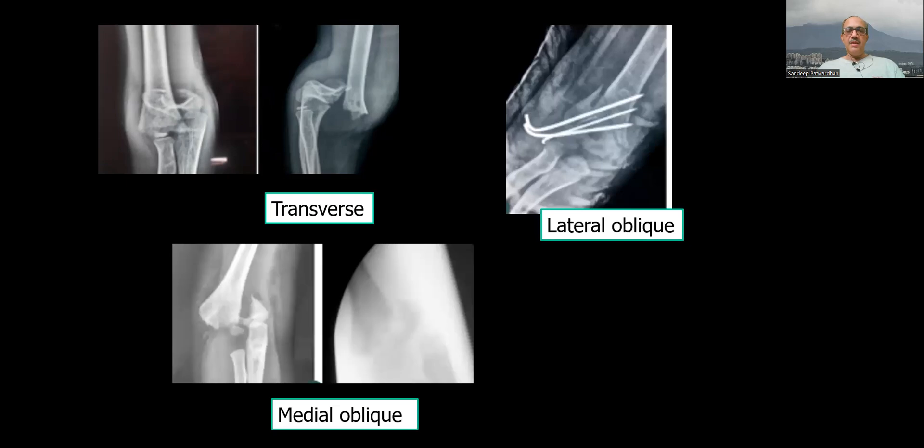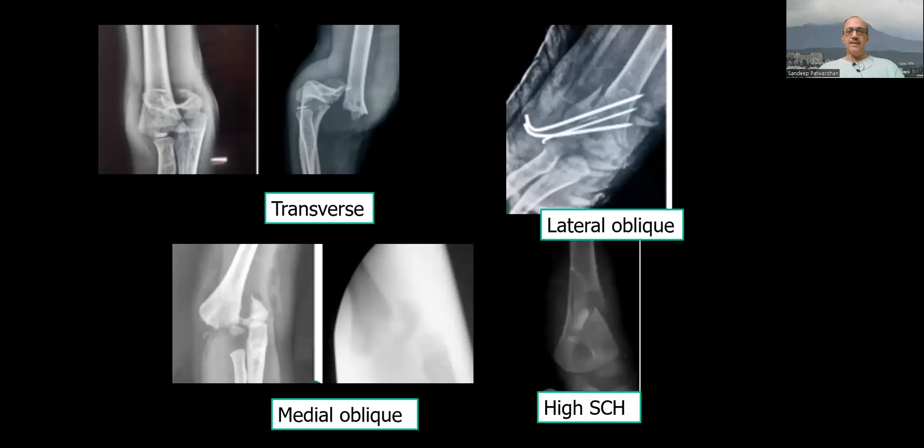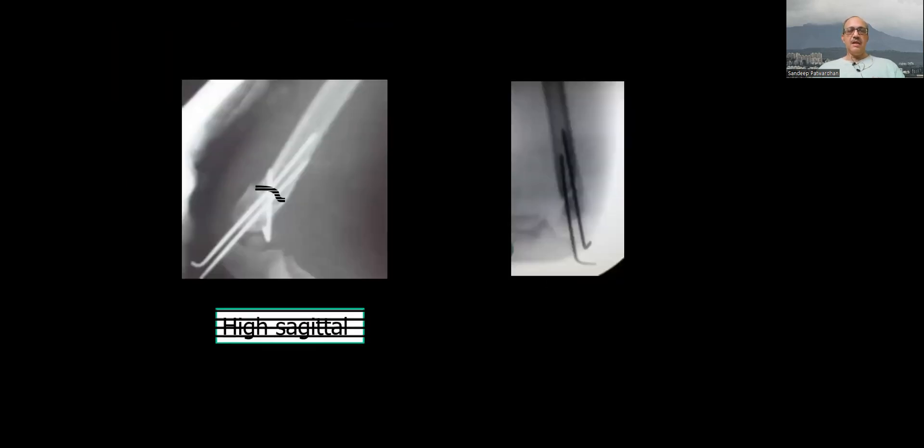The transverse one, the lateral oblique one, the medial oblique one, the high supracondylar, the very low supracondylar which may cause AVM.